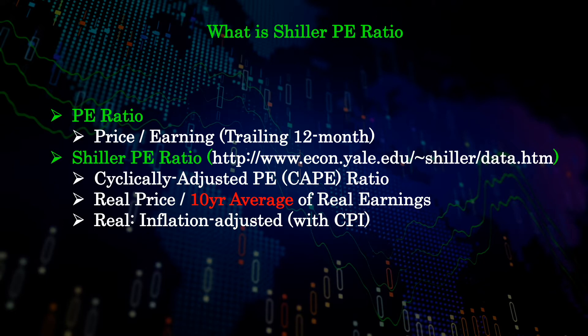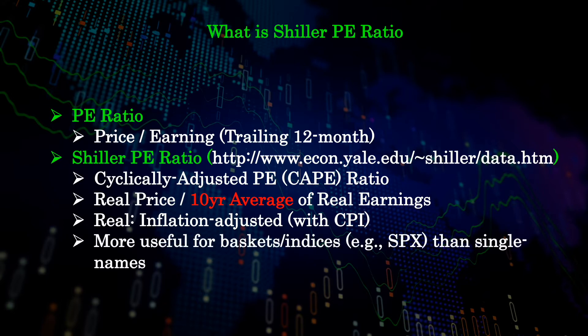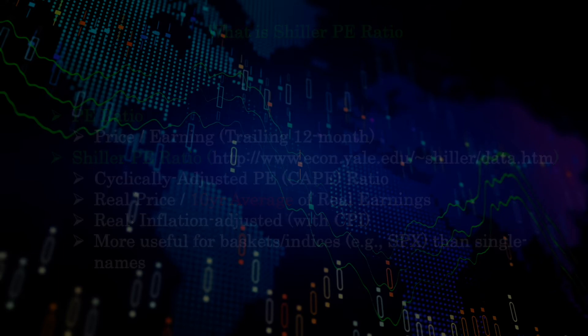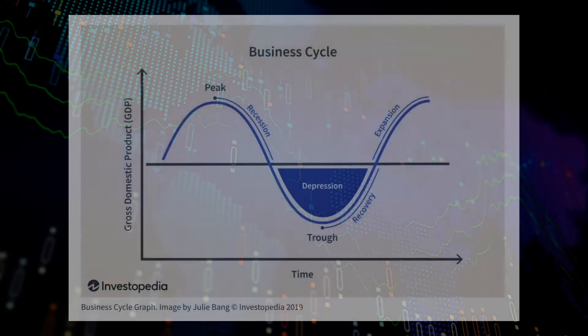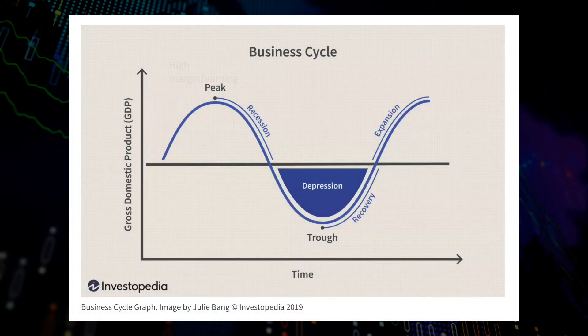The 10-year average smooths the earnings that otherwise can be noisy due to the economic cycle. Because of this long-term characteristic, the definition is most useful for a basket or index of stocks rather than single names. To explain this advantage of long-term cyclical adjustment, let's take a look at the business cycle and its possible impact on the regular short-term P/E ratio.